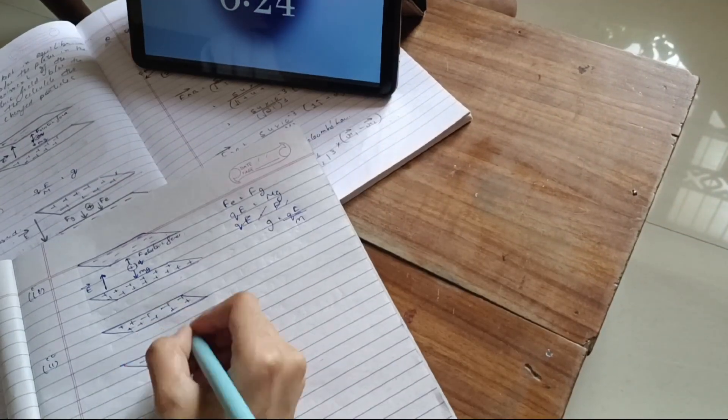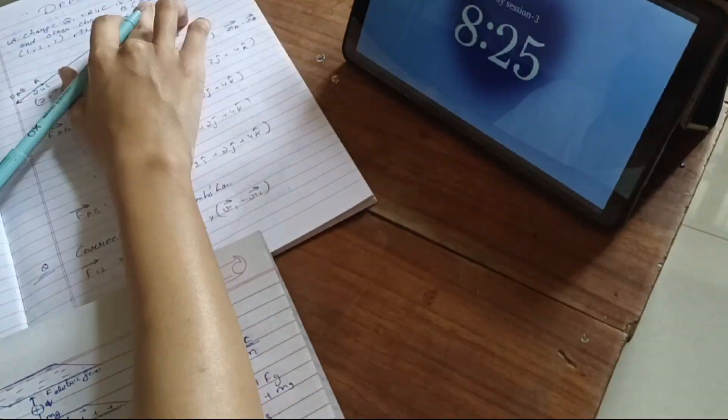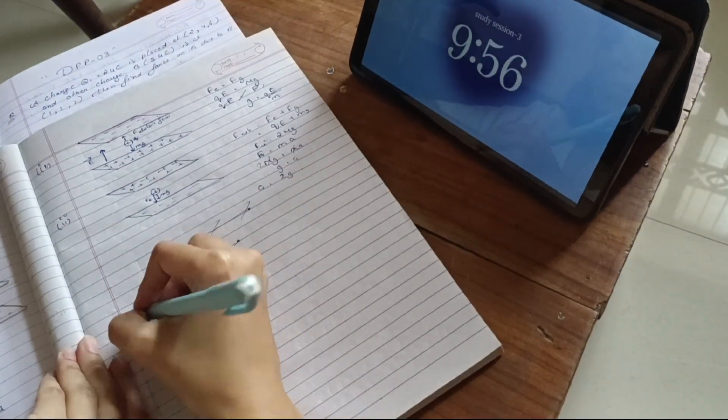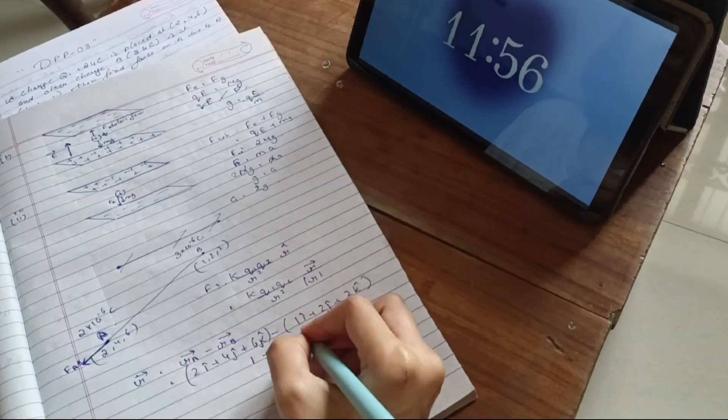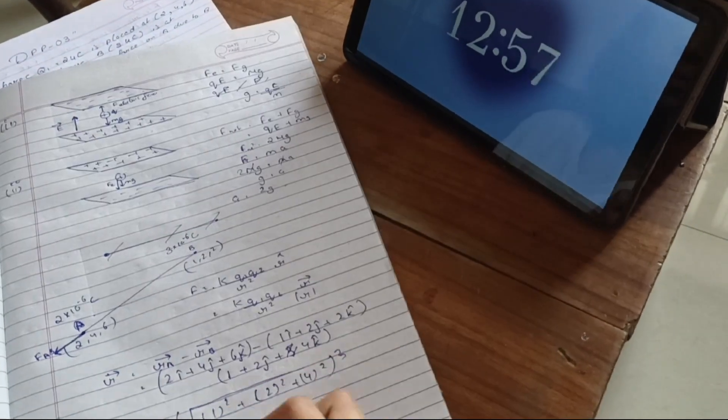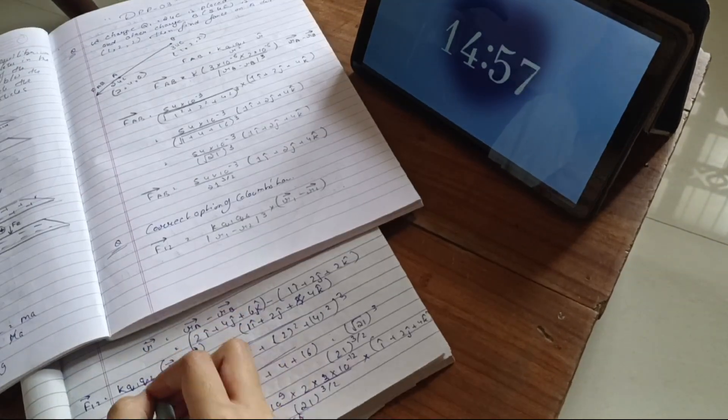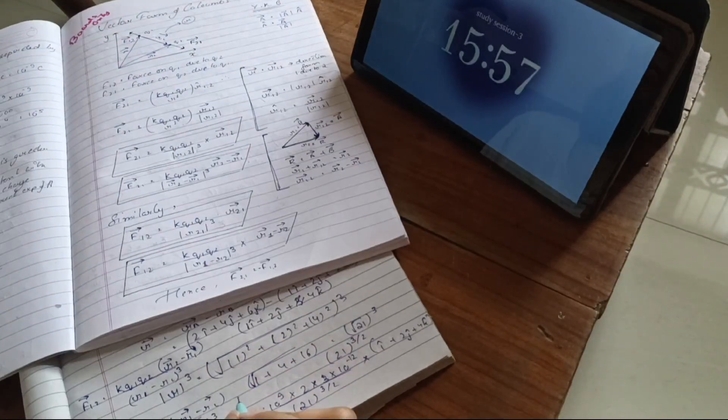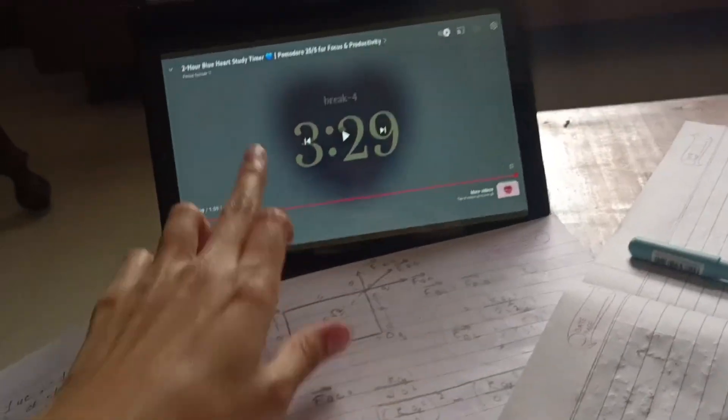So I started with the first chapter which is obvious. My plan was to revise this whole chapter this day only, like every possible thing which is possibly there in this chapter. I have to do that including derivations, formulas, concepts and small little things which are called RDX in the Parishram batch. If you know, you know.